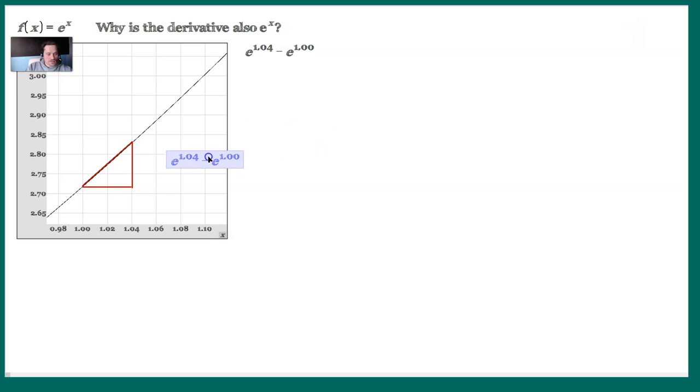This shows up in the graph as that vertical change. And then you're going to take this quantity and divide it by 1.04 - 1.00. Where does that show up? That shows up in the graph as the horizontal change right there. So this quantity we are computing is an approximation to the value of the derivative. It's a difference quotient that we learned in pre-calculus.